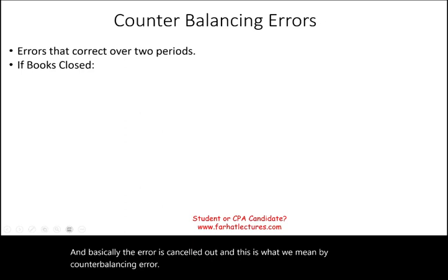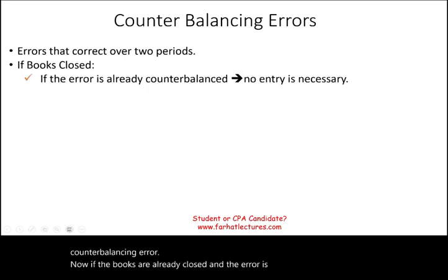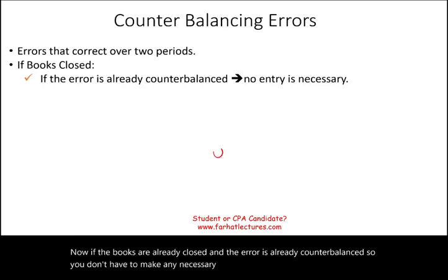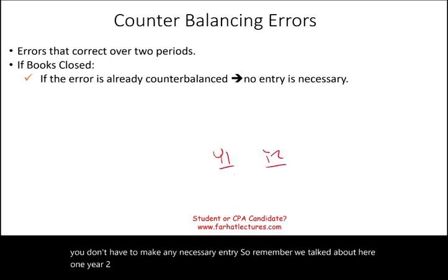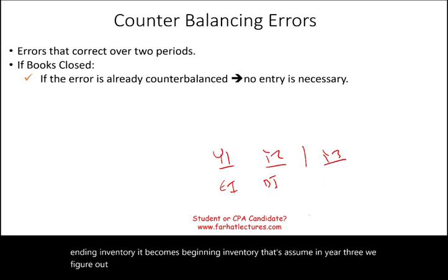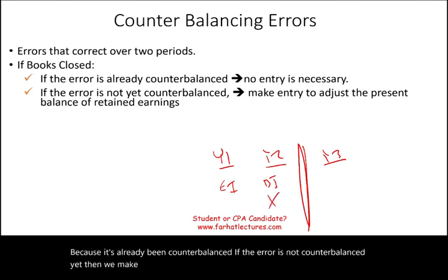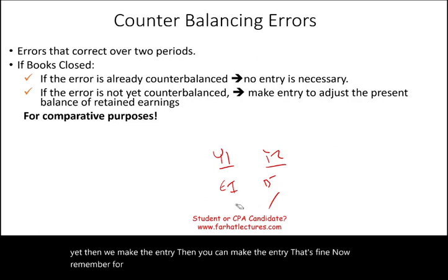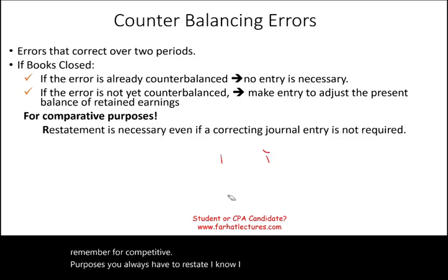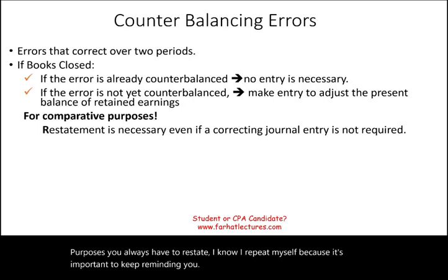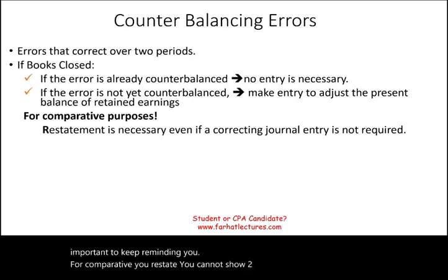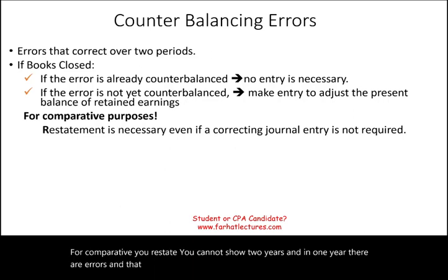If the books are already closed and the error is already counterbalanced, no entry is necessary. For example, if we made the inventory error in year one and in year three we discover it, we don't have to do anything because it's already been counterbalanced. If the error is not counterbalanced yet, then we make the entry. Remember, for comparative purposes, you always have to restate — you cannot show two years where one year has known errors. You have to fix the error in that particular year so all years are comparatively correct.